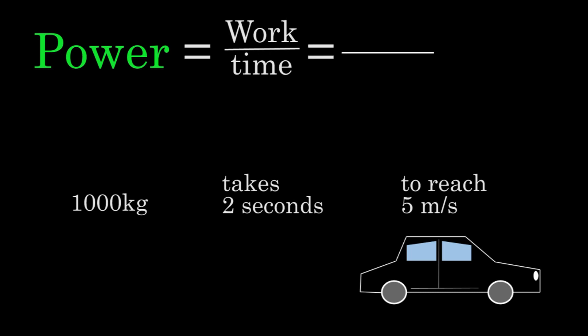To find the work done on the car, we just need to figure out how much energy was given to the car. In this case, the car was given kinetic energy and it took 2 seconds to give it that kinetic energy. If we plug in the values for the mass and the speed, we find that the engine had a power output of 6,250 watts.